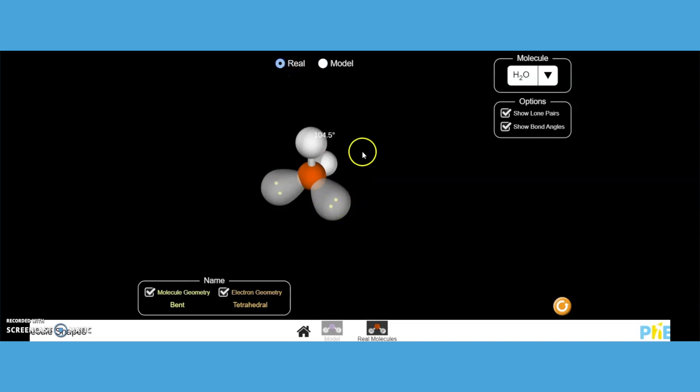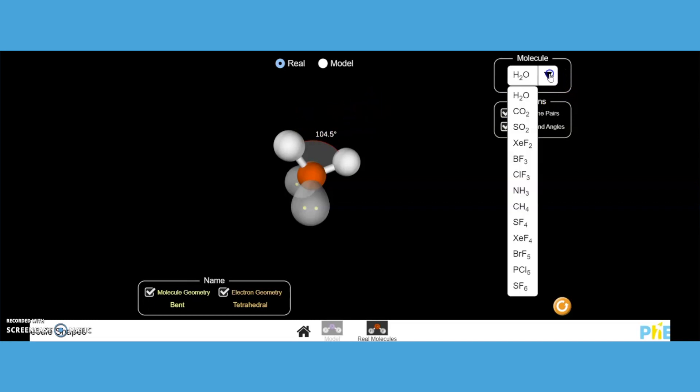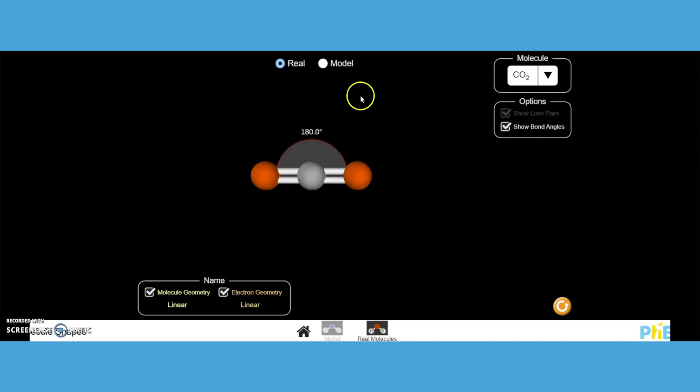They can rotate it around and it changes the angles, but every time they rotate it, it always goes back to that accepted bond angle. If you click on the next structure, carbon dioxide, notice it has that linear structure. No unshared pairs. Here's the model, here's the real.